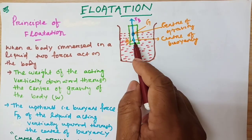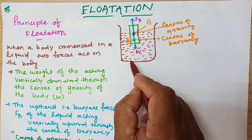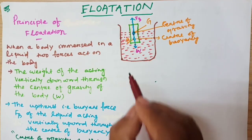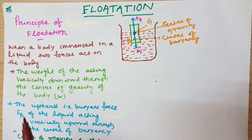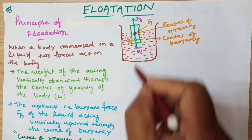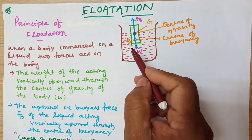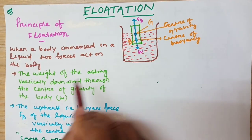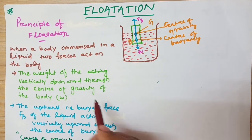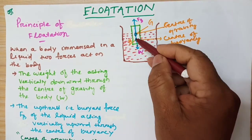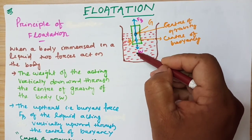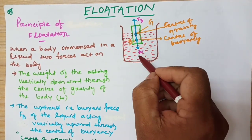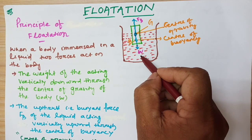So what happens when a body is immersed in water? When a body is immersed in a liquid, two forces act on the body. The first is the weight of the body acting vertically downward through the center of gravity — that is W.